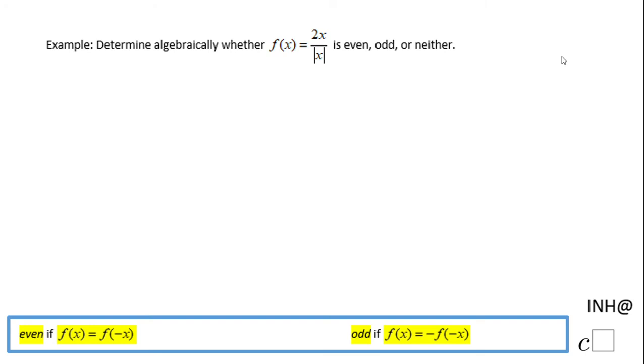Welcome or welcome back to I Need Help at C Squared. In this example, we have the function f(x) = 2x over absolute value of x, and we want to see if this function is even, odd, or neither. The first thing I'm going to do is use a numerical approach. I'm going to plug the number 2 into my function.